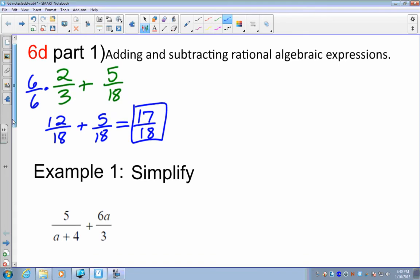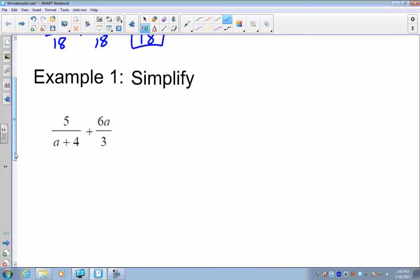For example 1 here, simplify it. We have 2 different denominators. We have a binomial a plus 4 and a monomial 3. They're not like yet. So what we have to do is multiply one fraction by the other's denominator, and the other fraction by the other's denominator. So we have 3 times 5 is 15. We have 3 times a binomial, so that's 3 times a is 3a plus 3 times 4 is 12.